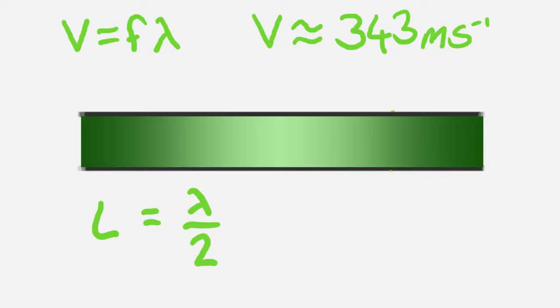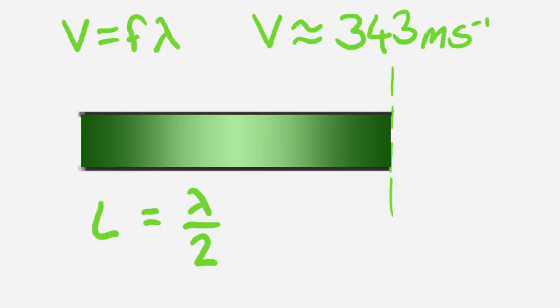We know from class that velocity equals frequency times wavelength. Velocity is equal to the speed of sound through air, which is mostly constant, but we'll get back to that later. So we can rearrange this equation to show that frequency is proportional to 1 over wavelength. And so if we decrease the length of the pipe, we will increase the frequency, and therefore the pitch.